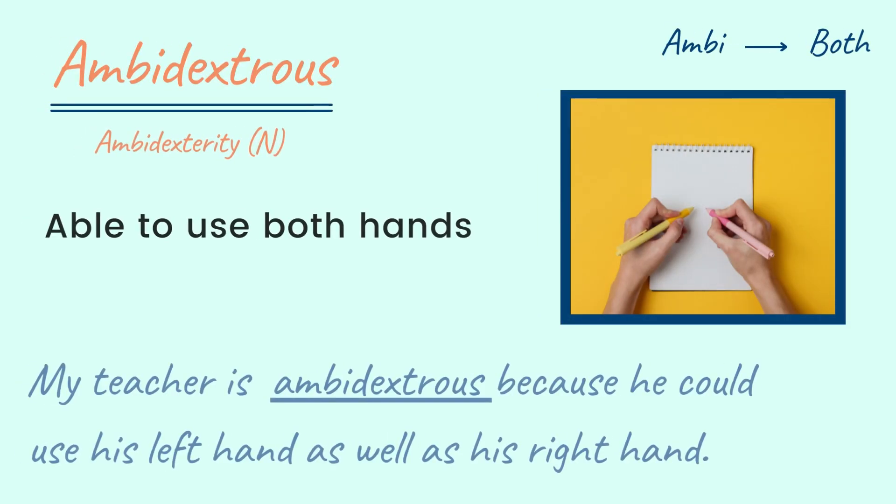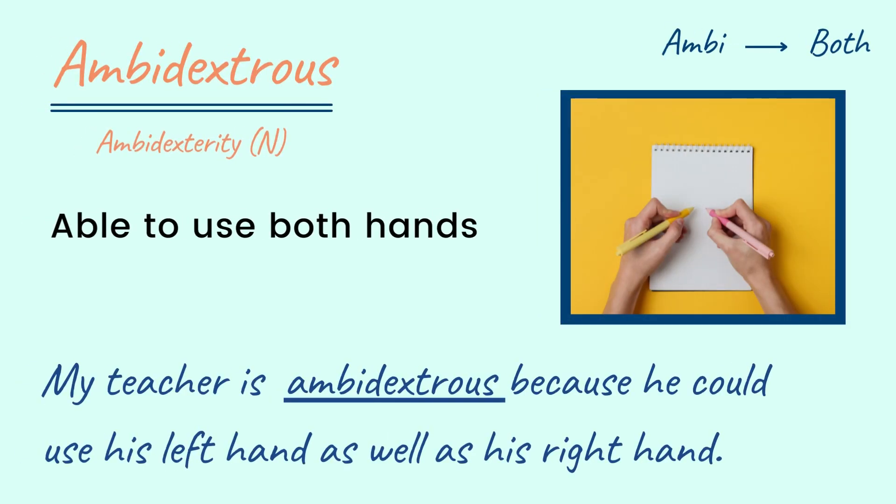Ambidextrous. If a person is able to use both hands with equal skill, then he or she is called ambidextrous. Here, the prefix 'ambi' means both. The noun is ambidexterity.